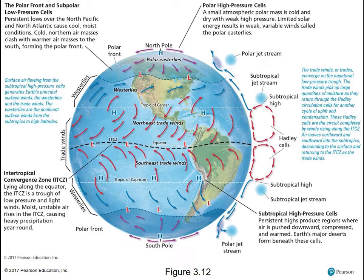Here again is that global map of wind — the ITCZ in the center, the northeast trades, the southeast trades, the subtropical high creating the westerlies, the polar easterlies formed by the polar high, and then where the polar easterlies and the westerlies collide, that's where the low pressure cells and the polar front are.